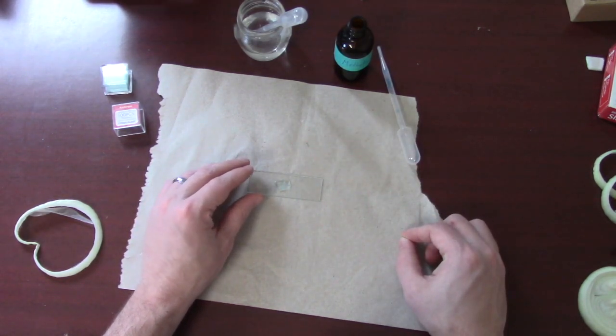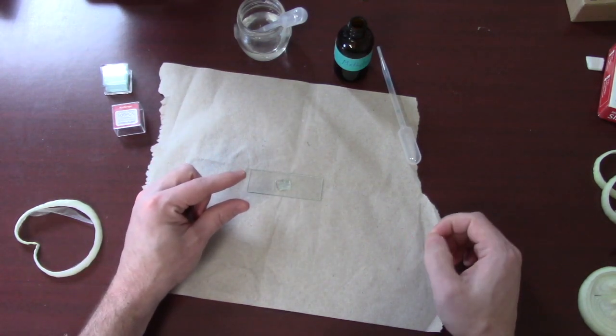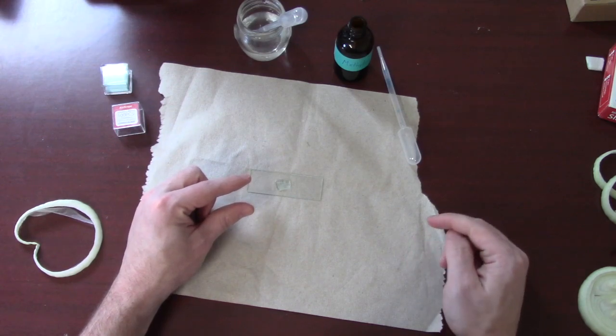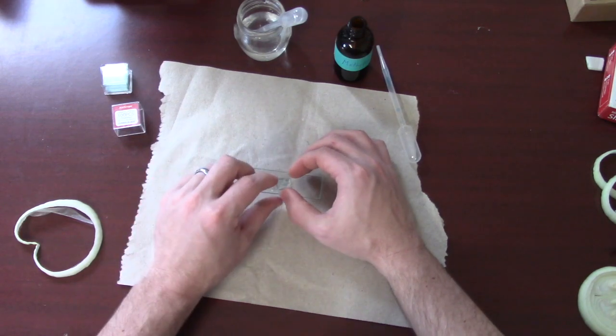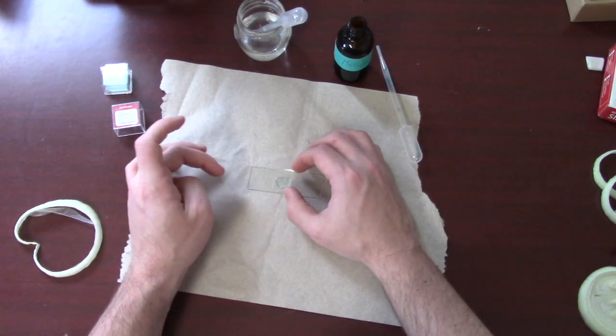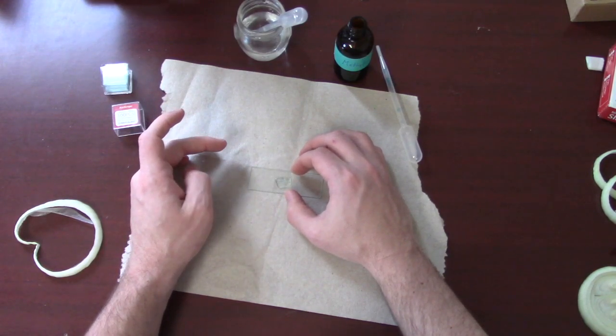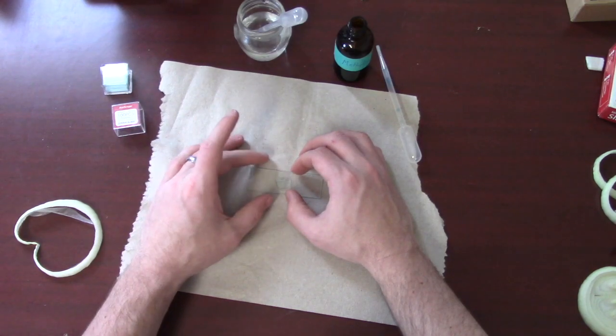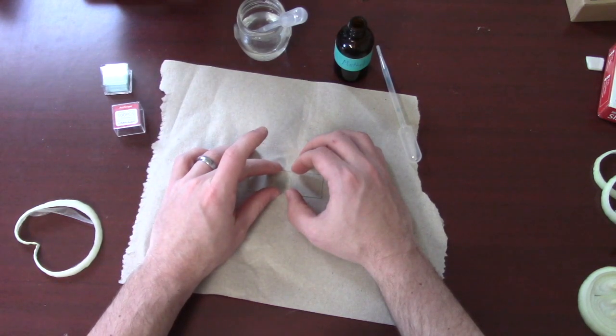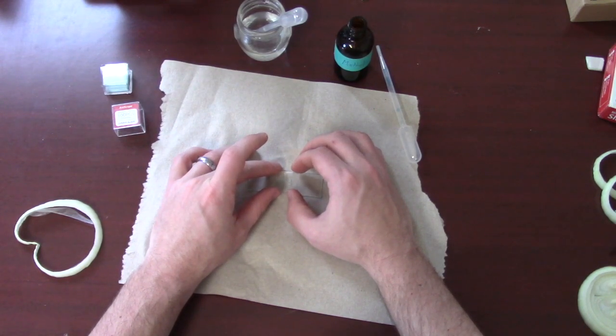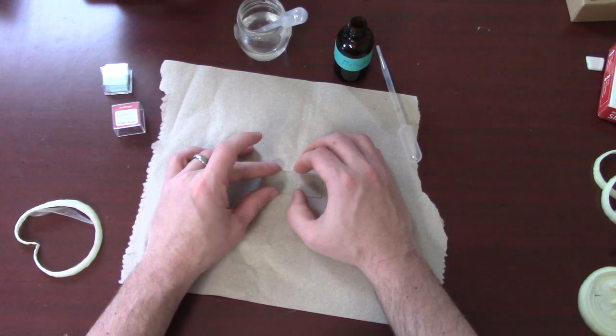The other important thing to remember about cover slips is if you just plop them straight down, you tend to catch a lot of bubbles. And bubbles make it harder to see in the microscope. So, what I like to do is I like to put one edge down. And so now the cover slip is at about a 45 degree angle. So, the left edge is touching the slide and the right edge is in my fingers. And just slowly lower it down and watch that water squeeze out all the air.